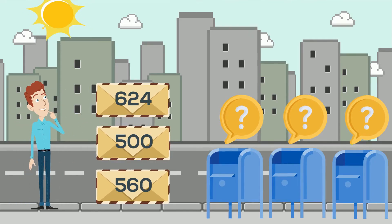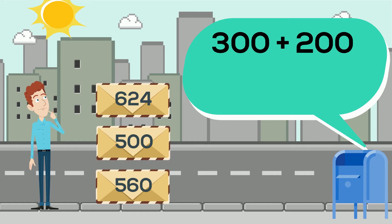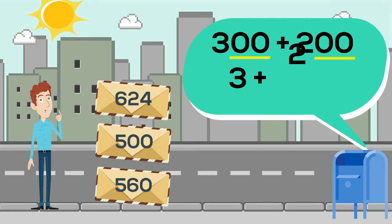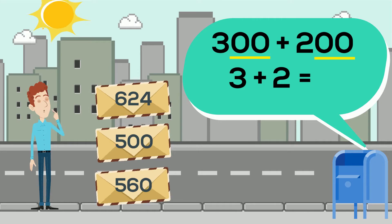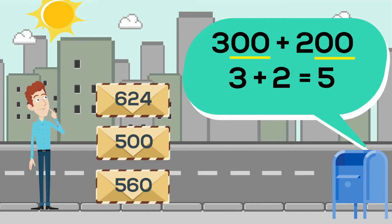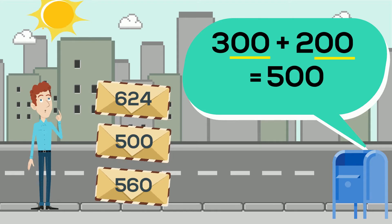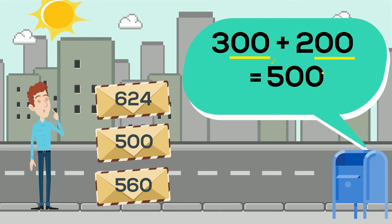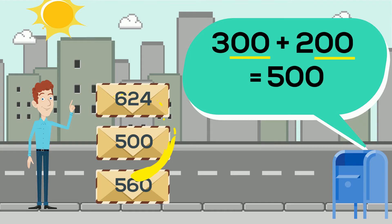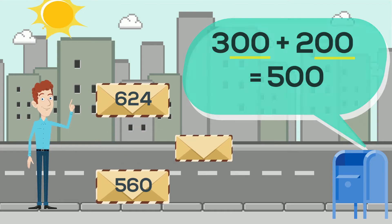This first mailbox says 300 plus 200. Notice that the ones and tens place are zero for both numbers. This means we can simply add 3 plus 2, which is equal to 5. Then, add back the two zeros so that we have 500. This envelope says 500, so let's drop it in the mailbox.